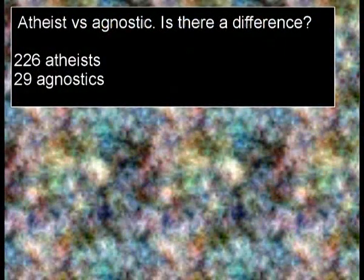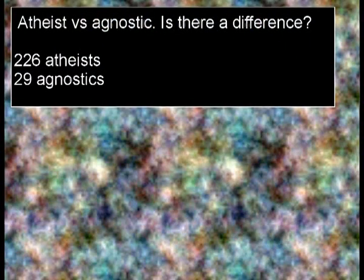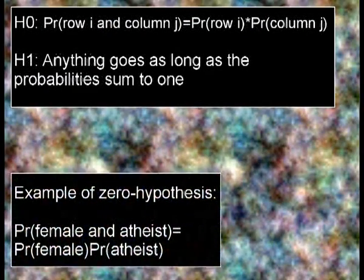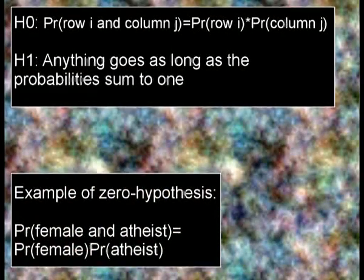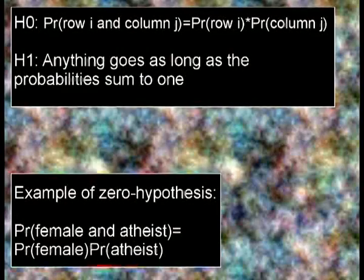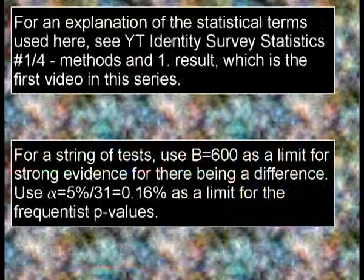First off, there are 226 atheists in this survey and only 29 agnostics. Still, it could be possible to detect differences between the groups. For every question, we can entertain two hypotheses: H0 is independence between question one and question two, and H1 is that any probability goes. An example of the null hypothesis is: the probability of being female and being atheist is the probability of being female times the probability of being an atheist. An explanation for the statistical terms used here can be found in the first part of this series.